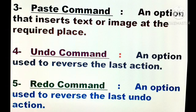Fourth is Undo command — an option used to reverse the last action. Undo command is used whenever we want to reverse the last action. Fifth is Redo command — an option used to reverse the last undo action. This is very important to remember: Redo command is used when we want to reverse the last undo action. That means if we have done an undo action, and then we do redo, we are reversing that undo action.